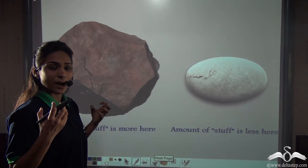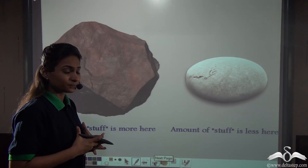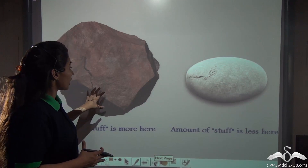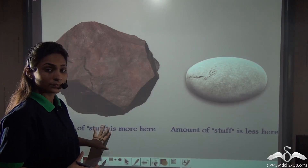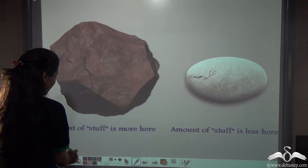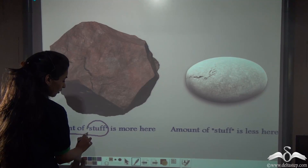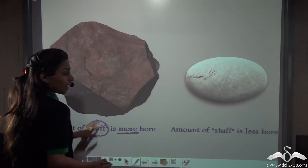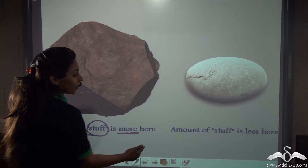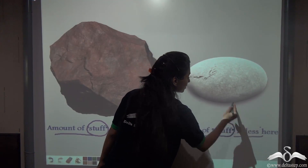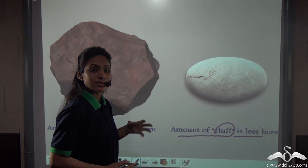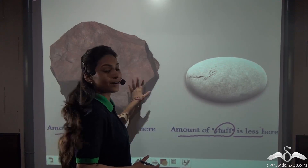Everything around us is made up of some kind of stuff. This big stone is also made of some kind of stuff. The stuff here is more, and the stuff from which the smaller one is made is less. So the amount of stuff in the big stone is more — that is why moving it requires a lot of effort, whereas the small stone has less stuff and requires lesser effort.